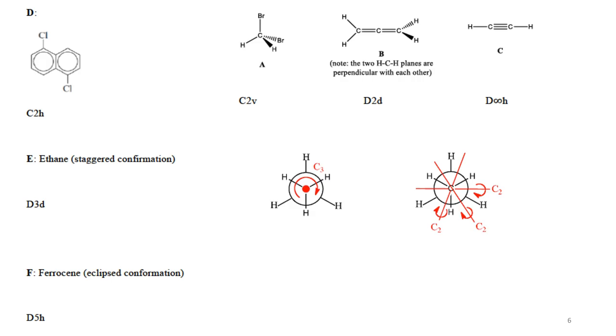Symmetry. The first one, dibromomethane. I believe we discussed a similar molecule in class, dichloromethane. This is C2v. The C2 goes through the carbon atom and bisects the bromine-carbon-bromine bond and also the hydrogen-carbon-hydrogen bond.